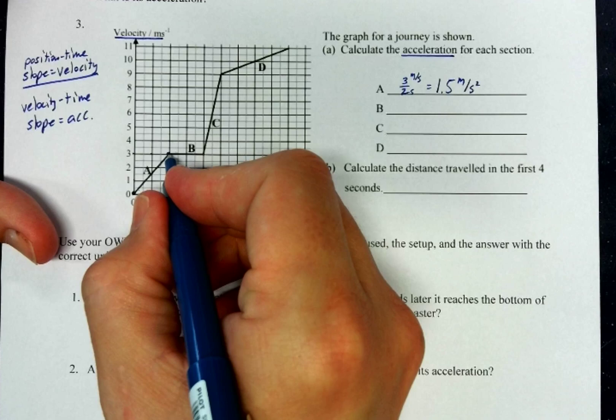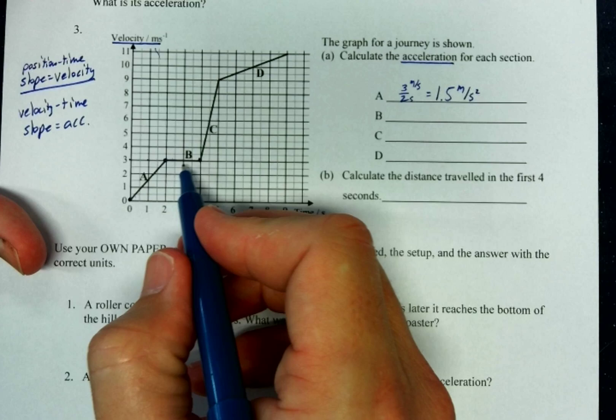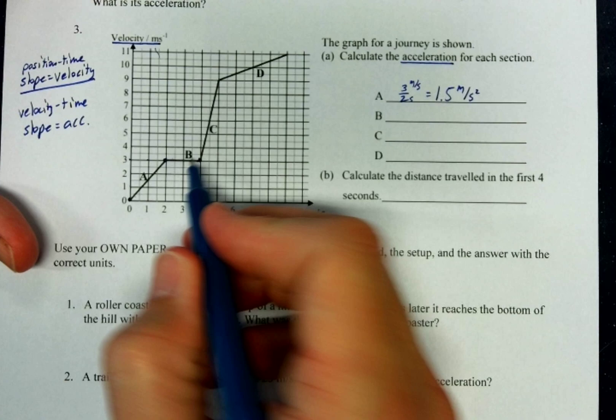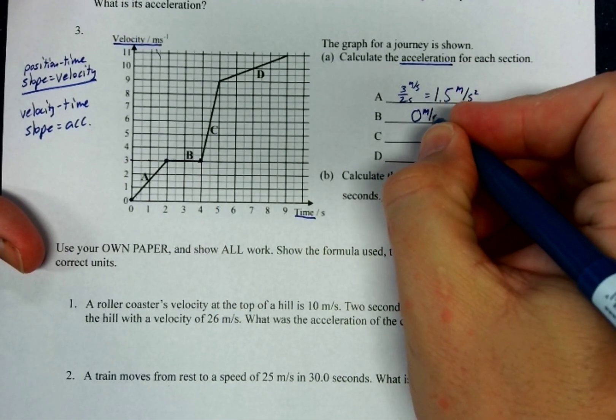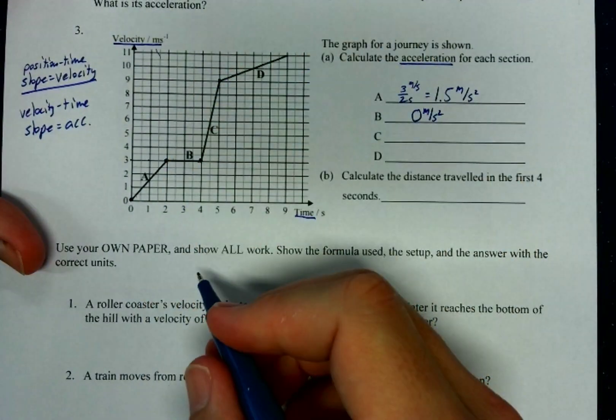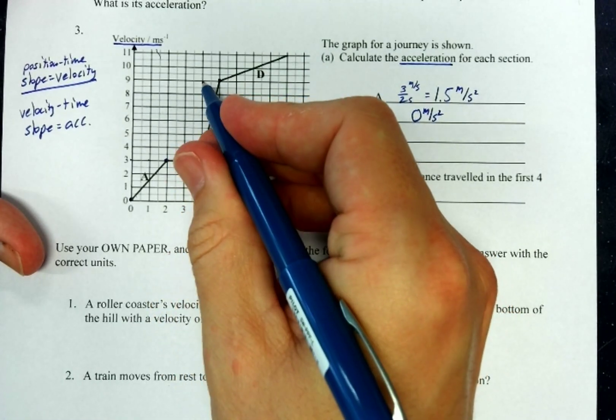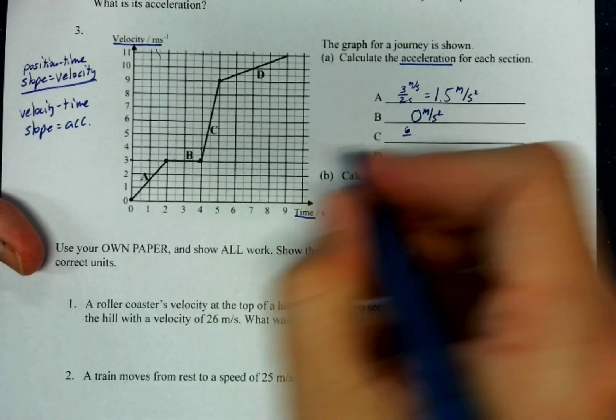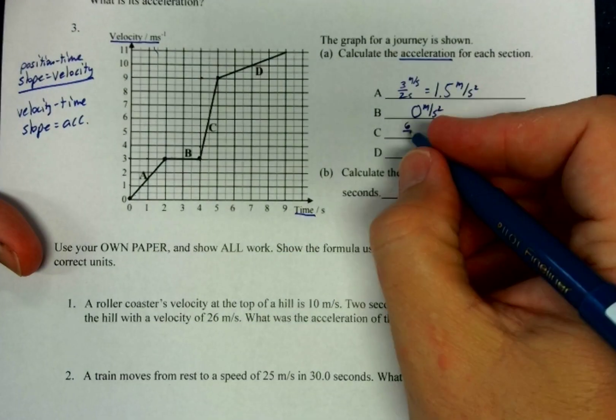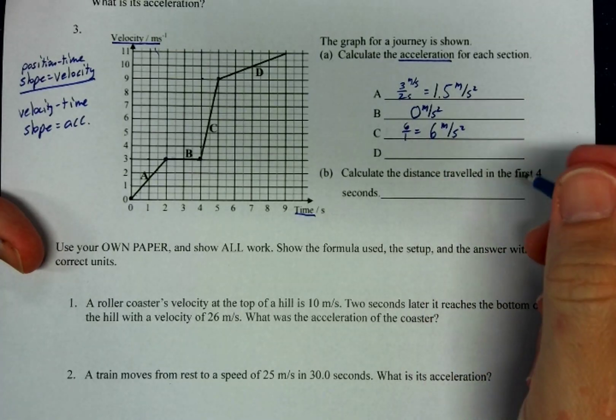With a velocity versus time graph, the slope is the acceleration. So that's actually a pretty quick and easy way to calculate the acceleration. All we need is the slope. We go up one, two, three, and then over two. And that would be three over two. The three is in meters per second and the two is in seconds. And so I do that and I end up getting 1.5 meters per second squared. And it is positive because it's going up.